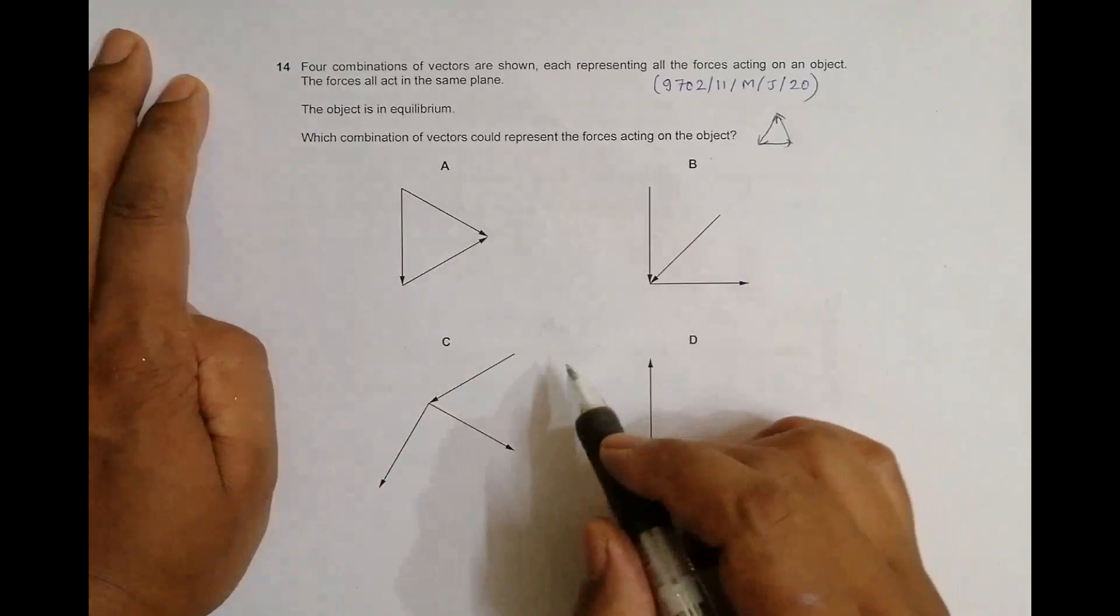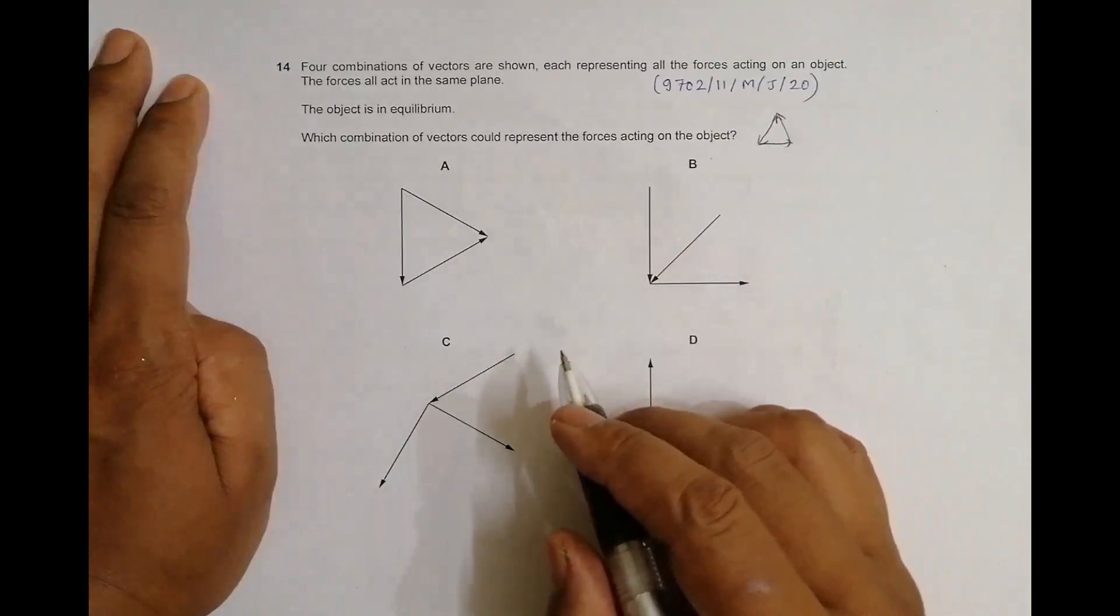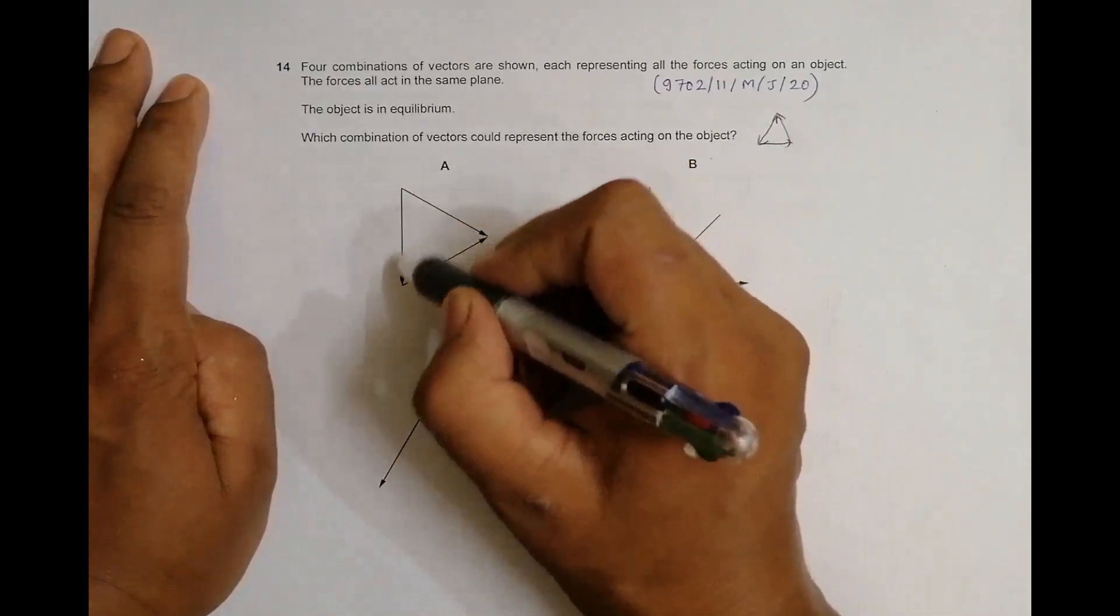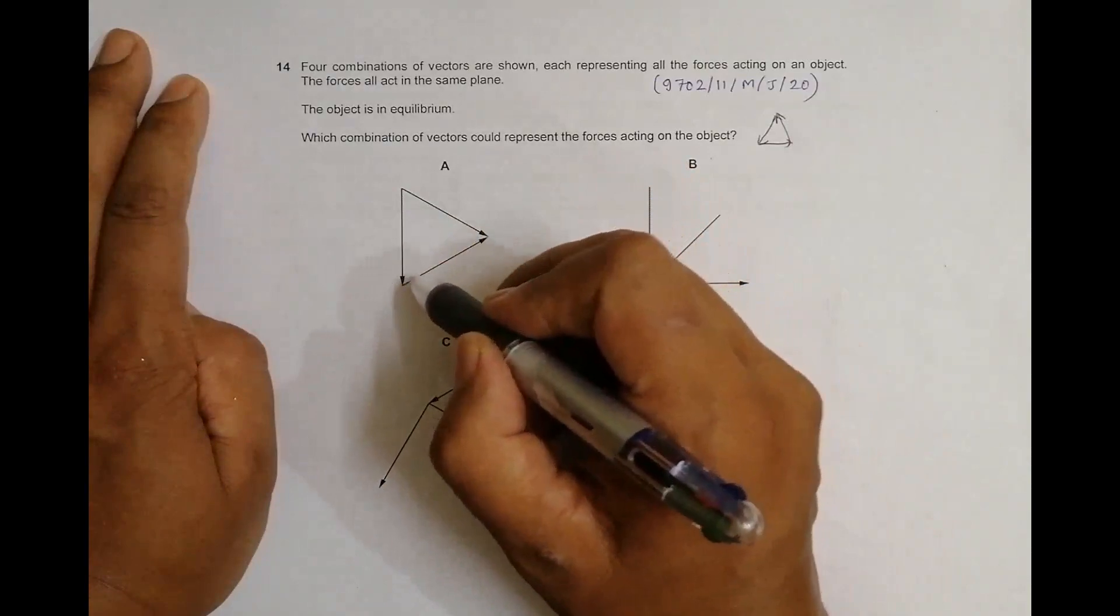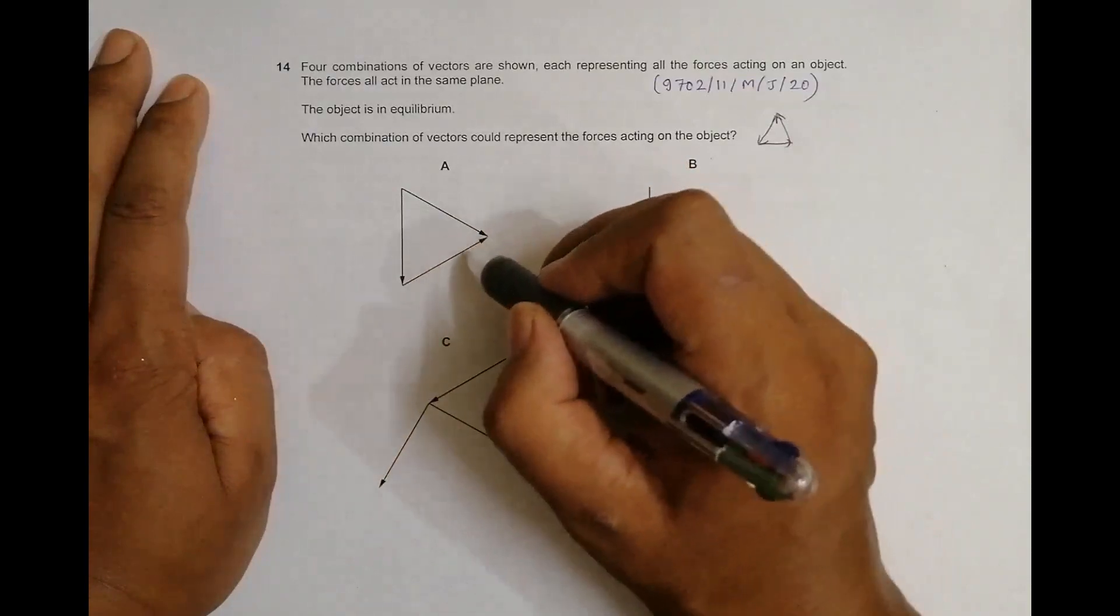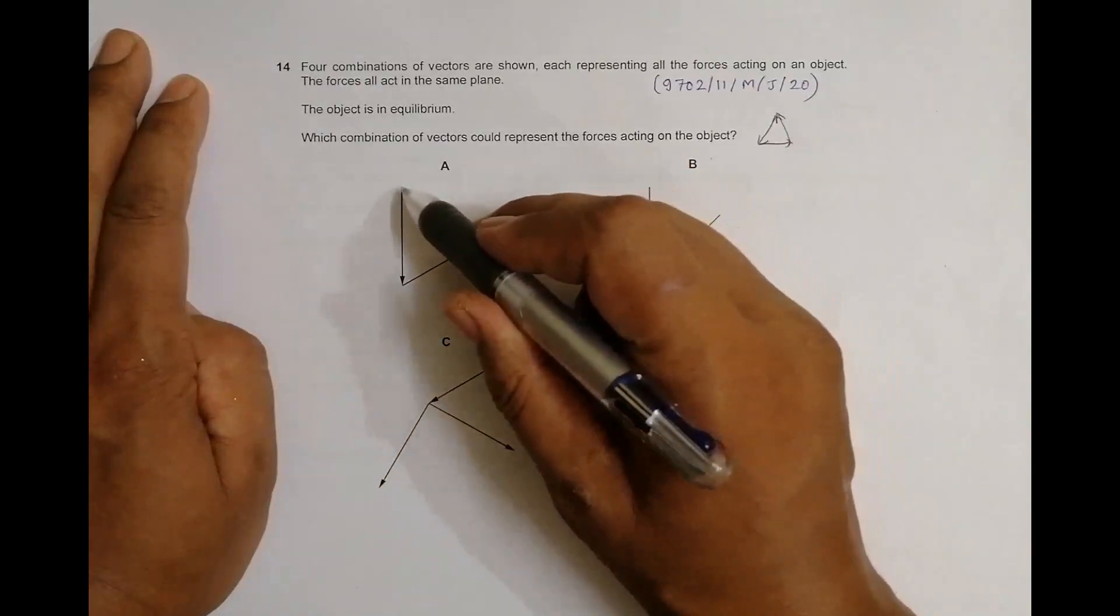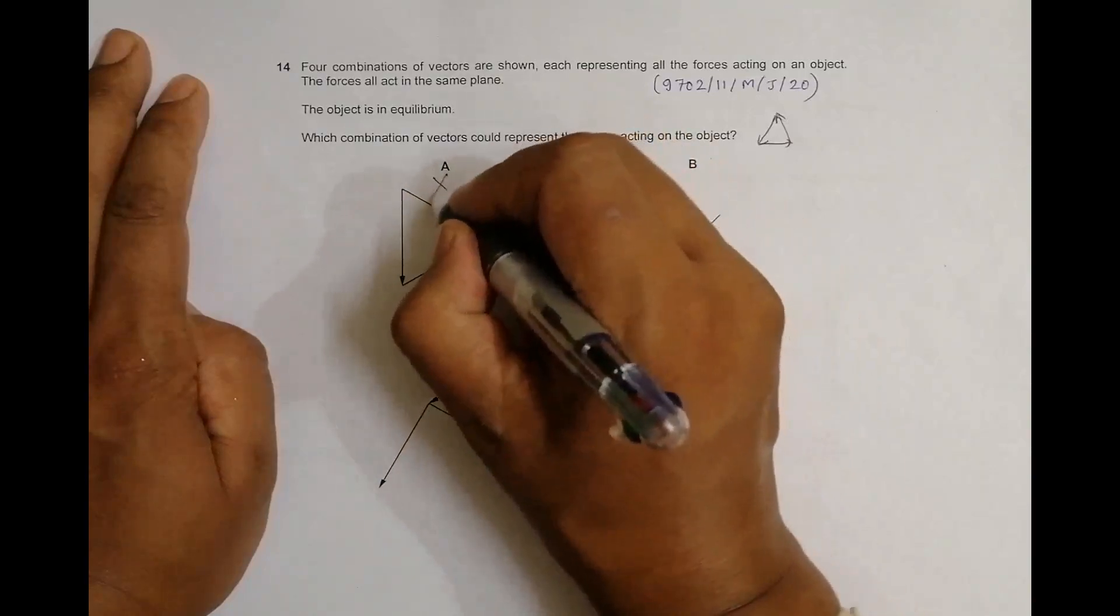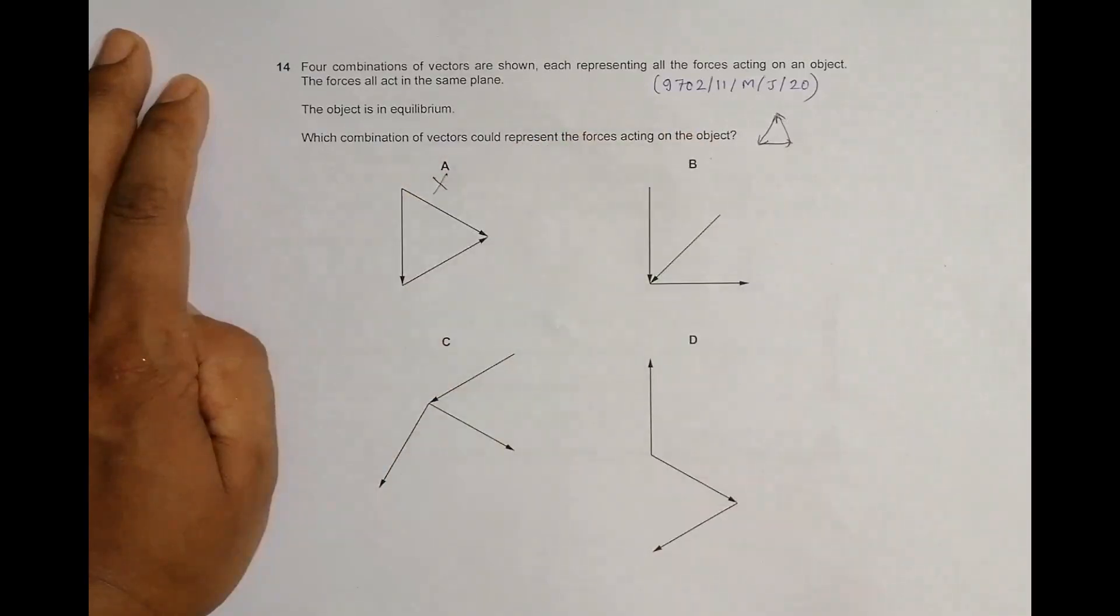So let's see here. Here we have a triangle, but the forces are not taken in order. This force rises from the head of this force, okay, but this force is rising from the tail of this thing. So this does not qualify.